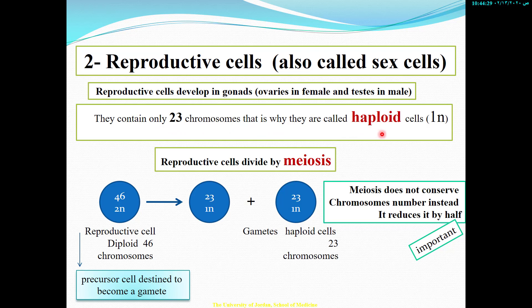Somatic cells have a copy from your mom and a copy from your dad for each chromosome, so we name them diploid — double the chromosomes, two copies. Sex cells are the total opposite: from each chromosome there is only one single copy. Therefore a sperm or oocyte has only 23 chromosomes. They don't have two copies, and that's why we call them 1n — haploid.